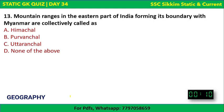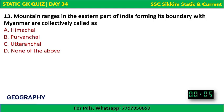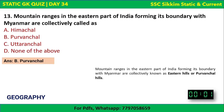Geography Question 3: Mountain ranges in the eastern part of India forming its boundary with Myanmar are collectively known as what? The correct answer is Purvanchal. In Hindi, 'Purv' means east, so the eastern mountain ranges are called Purvanchal. They form the boundary with Myanmar and are also collectively known as the eastern hills.